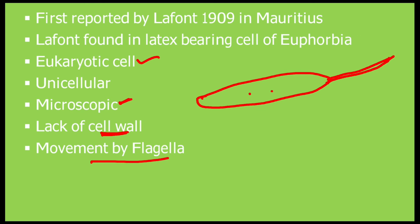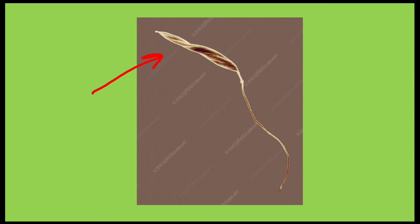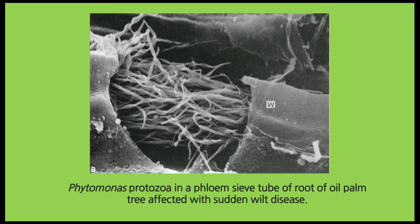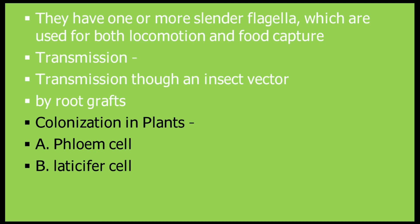They move by flagella, which help them move from one place to another. This structure visible here is the flagellated protozoa — Phytomonas — shown infecting the root of oil palm, causing the disease sudden wilt. They have one or more slender flagella used for both locomotion and food capture.